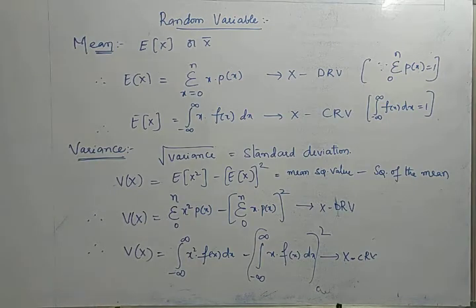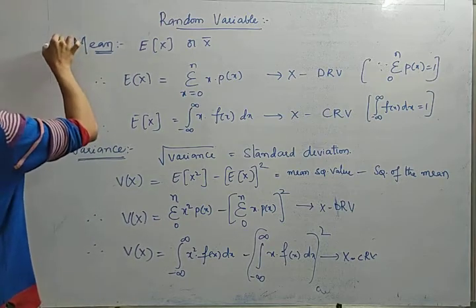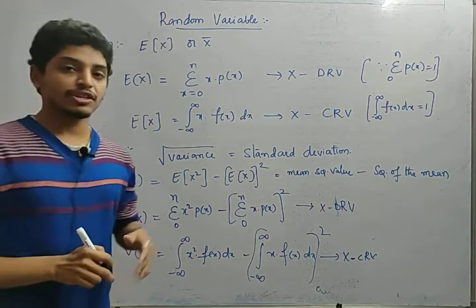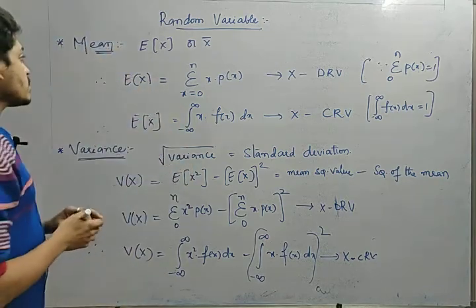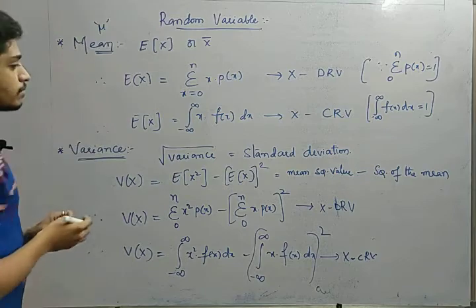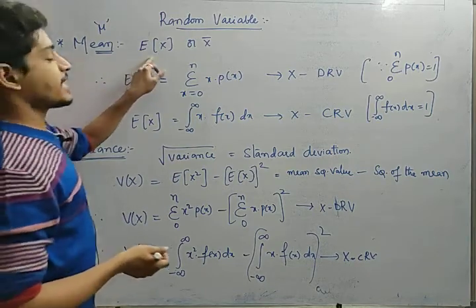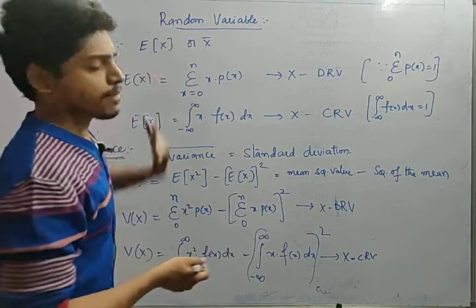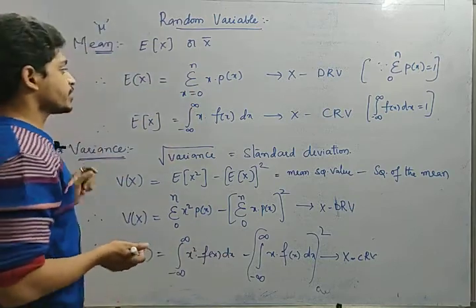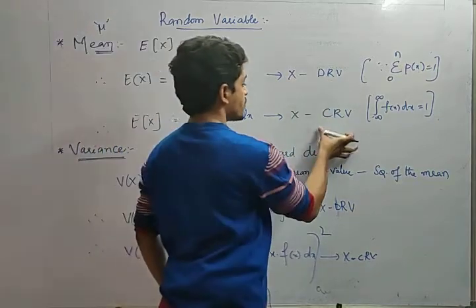Now let us see the very important formulas: mean and variance. Mean is nothing but the average. Mean is denoted by mu. Mean is also called the expectation of the random variable, or X-bar. Expectation is nothing but the mean.